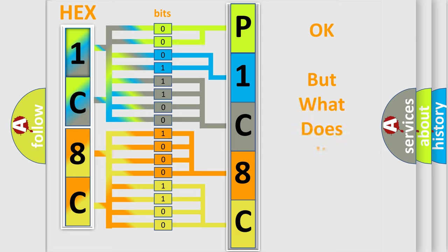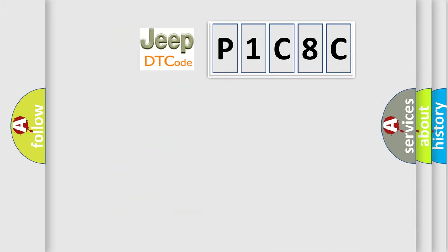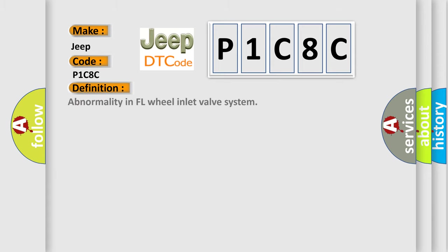The number itself does not make sense if we cannot assign information about what it actually expresses. So, what does the diagnostic trouble code P1C8C interpret specifically for Jeep car manufacturers? The basic definition is: Abnormality in FL wheel inlet valve system.